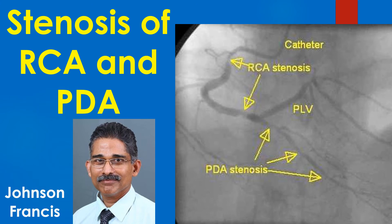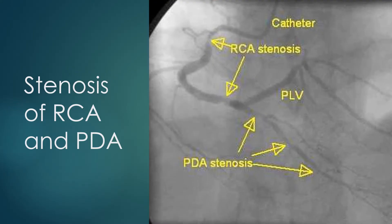The right coronary angiogram shows multiple stenotic lesions. The RCA has two lesions: one in the proximal region and another distally just before the crux, where the posterior descending coronary artery and posterior left ventricular branches originate. This is a precrux stenosis of the RCA. The RCA is also seen to be a bit tortuous.